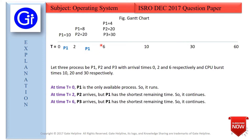At time t=6, P3 arrives with a burst time of 30. But P1 still has the shortest remaining time — P1 came with burst time 10 and has run from 0 to 6, so it has 10 minus 6 equals 4 remaining. P2 has not run at all so it has 20 remaining, and P3 has 30. The shortest remaining is P1, so we continue with P1.